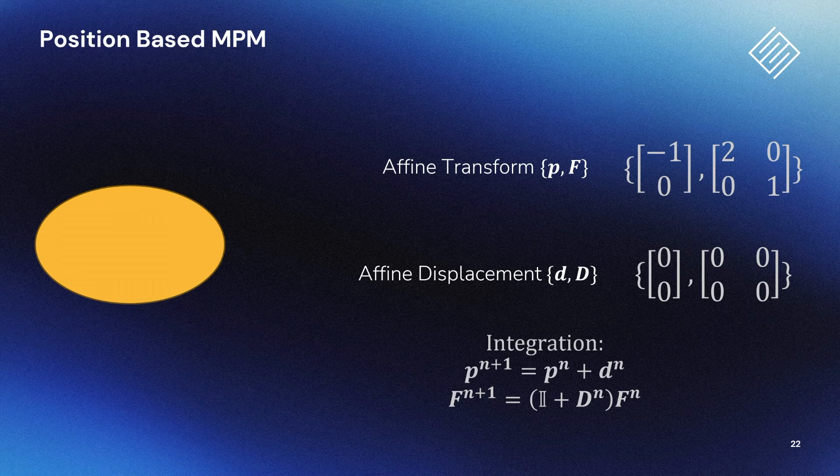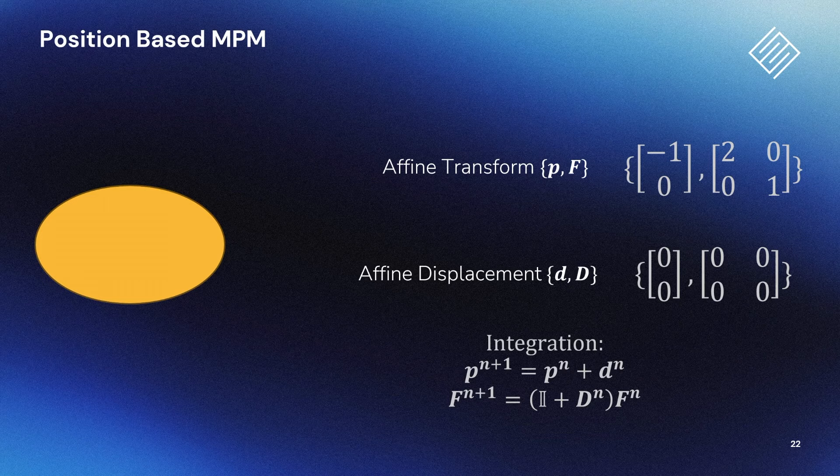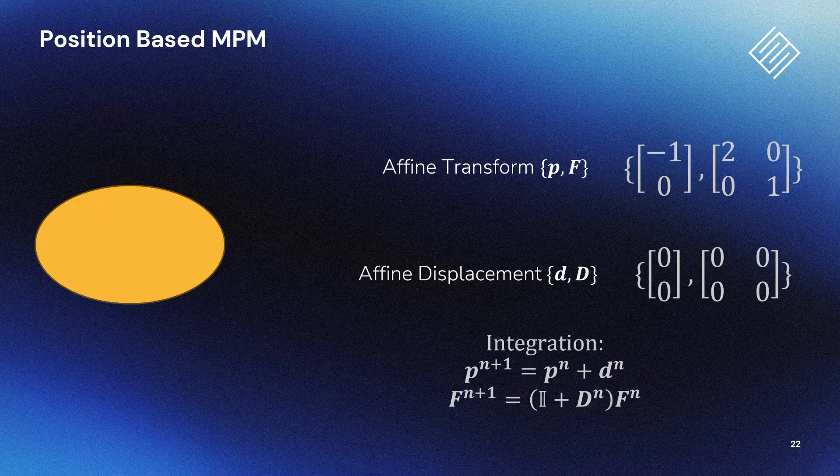So how can we apply this approach to MPM particles? Similarly to the Lagrangian PBD case, we can adjust the velocity such that the constraints are satisfied. This procedure replaces the calculation of forces that we would do in an explicit integrator with a calculation of updates to the particles' velocities that maintain the relevant constraints. The rest of the MPM update loop looks exactly the same as the explicit integration case.